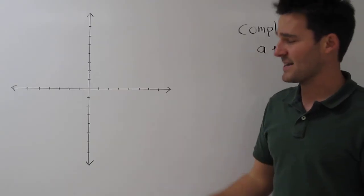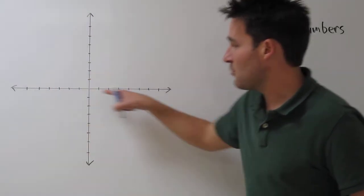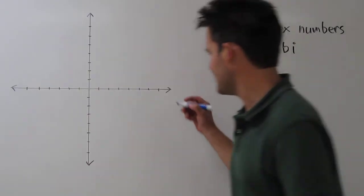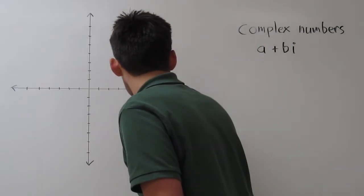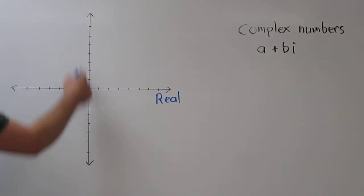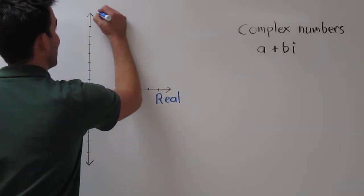Let me label the axes, and you'll see why. We're going to label this one, which we normally call the x-axis, the real axis. And up here, what we normally call the y-axis, we're going to label it the imaginary axis.